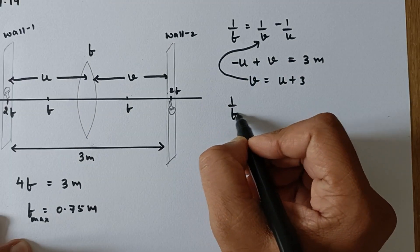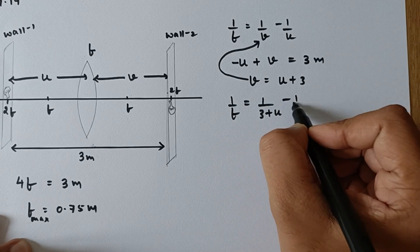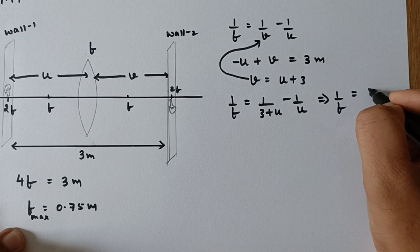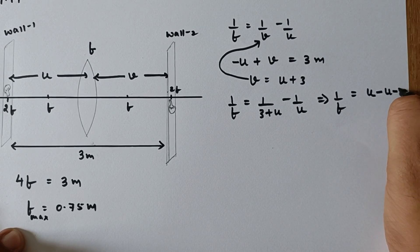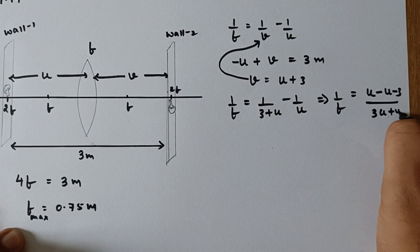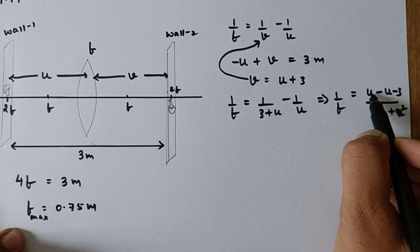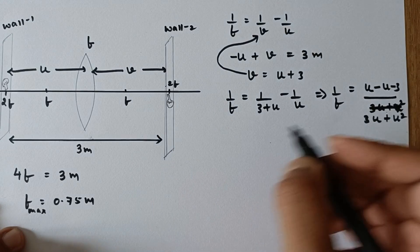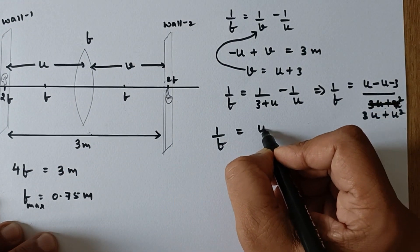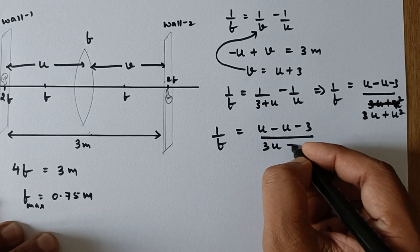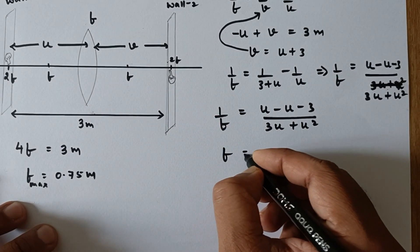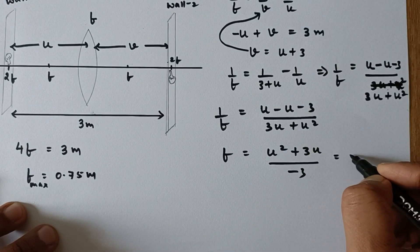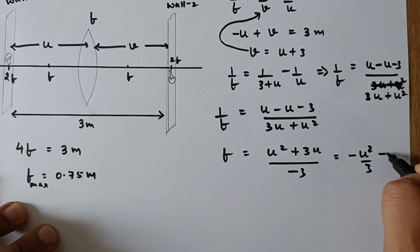Substituting into the lens formula: 1/f = 1/(3 + u) − 1/u. Taking the LCM, we get 1/f = (u − (u − 3)) / (3u + u²). Simplifying the numerator gives 3, and the denominator is u² + 3u. Taking the reciprocal, f = (u² + 3u) / 3, which can be written as f = −u²/3 − u, after accounting for sign conventions.